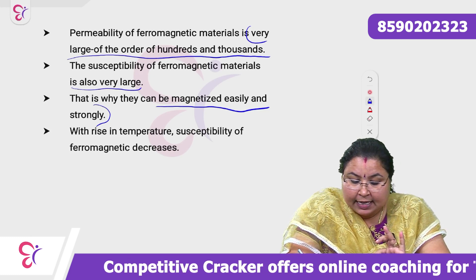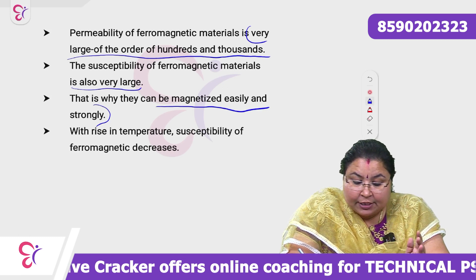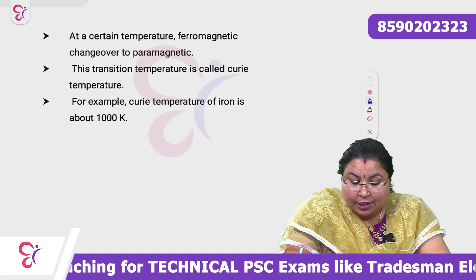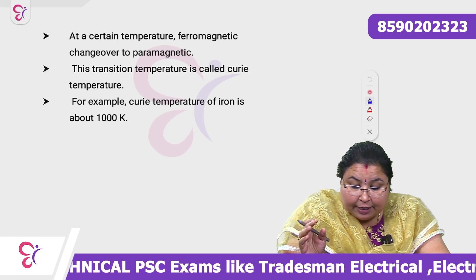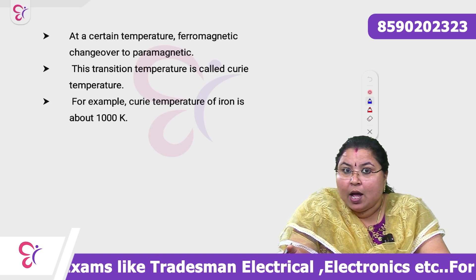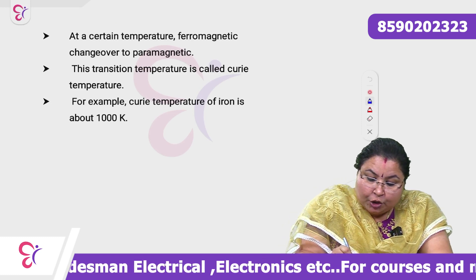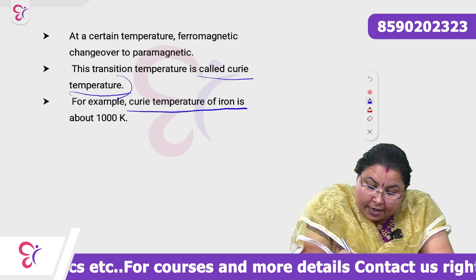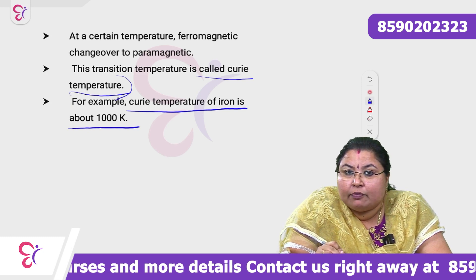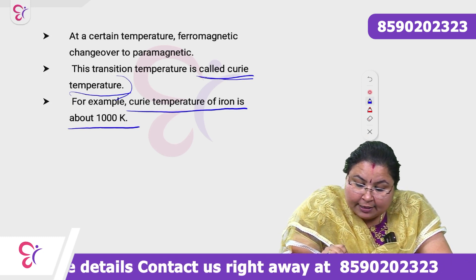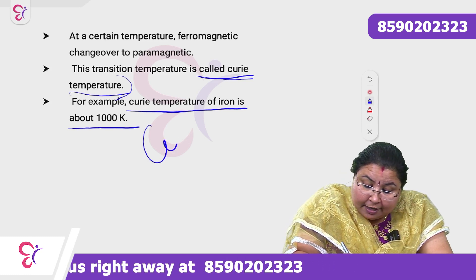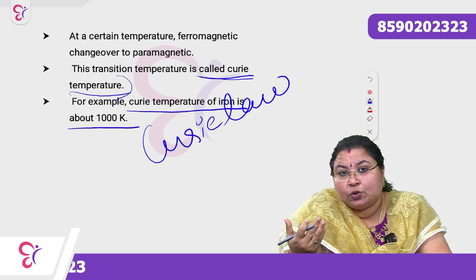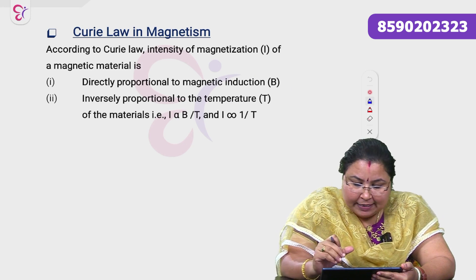With a rise in temperature, the susceptibility of ferromagnetic substances decreases. At a certain temperature, ferromagnetic materials change over to paramagnetic. That particular temperature is called the Curie temperature. For example, the Curie temperature of iron is about 1000 Kelvin. The temperature at which a ferromagnetic material becomes paramagnetic is known as the Curie temperature.